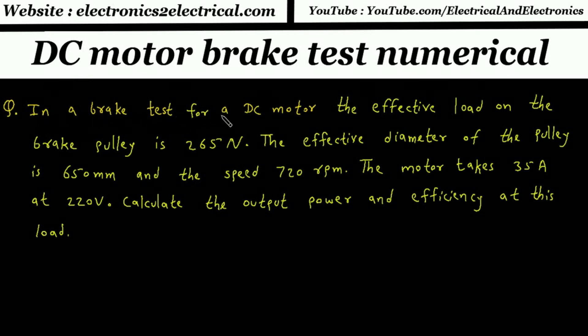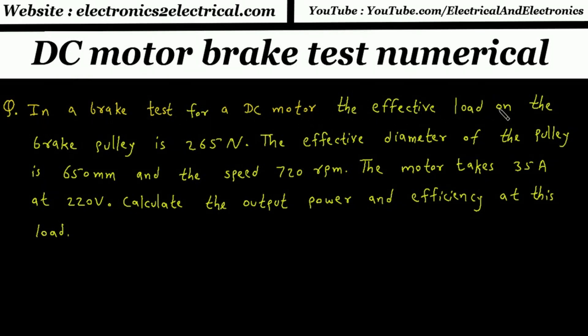In a brake test for a DC motor, the effective load on the brake pulley is 265N.